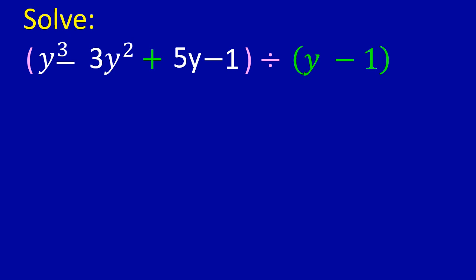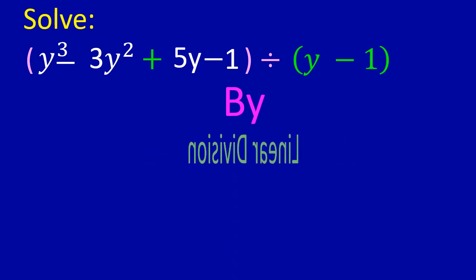Hello friends, welcome to the new video. Here we will solve y³ minus 3y² plus 5y minus 1 divided by y minus 1 using the linear division method. Before we begin, let us remind ourselves of the steps for simple division: first, divide the first term of the dividend by the first term of the divisor; second, multiply the quotient by the full divisor; and third, change the sign.